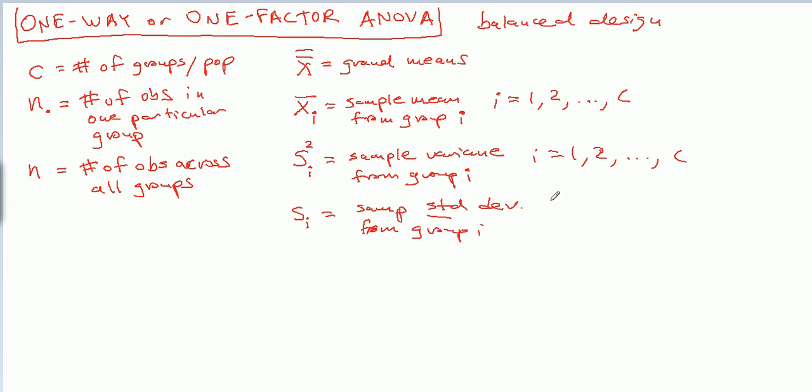Again, i being 1 to C. You'll have C of these, C of these, and C of these. What else is important? Symbolically, what other symbols will we use? We're going to be interested, it's important for us to know the level of significance of our one-way ANOVA hypothesis test. So that's always important to look for in an example.